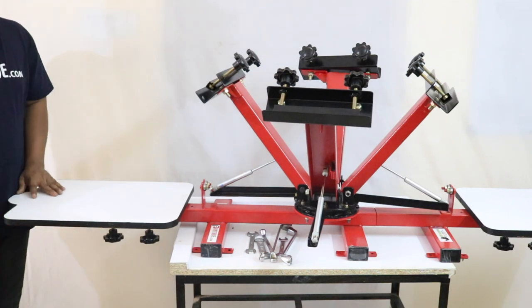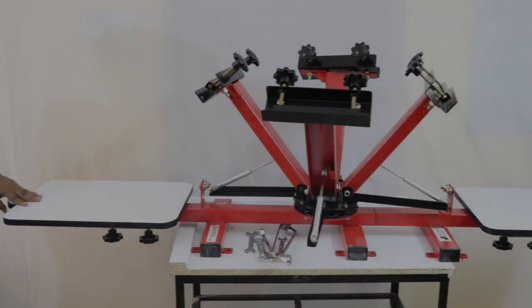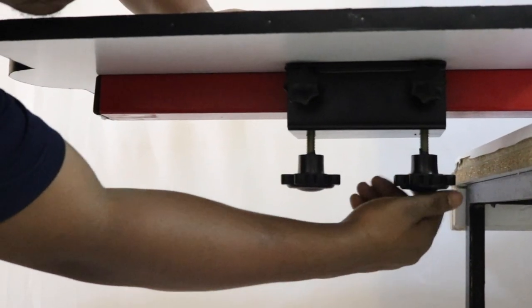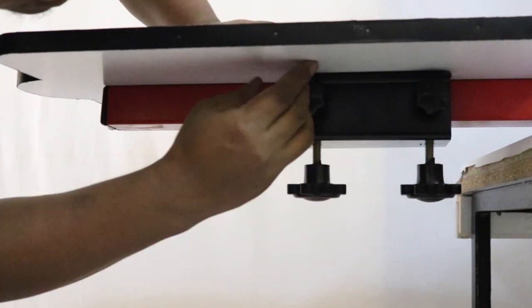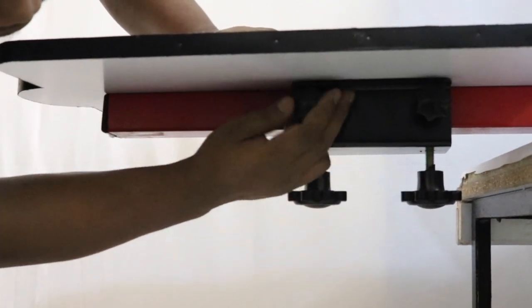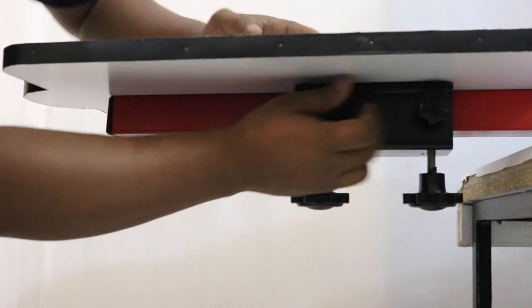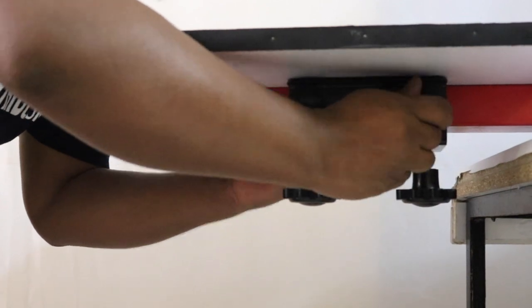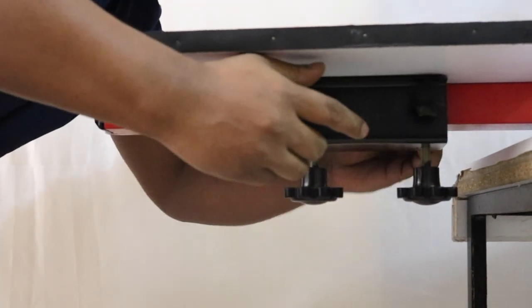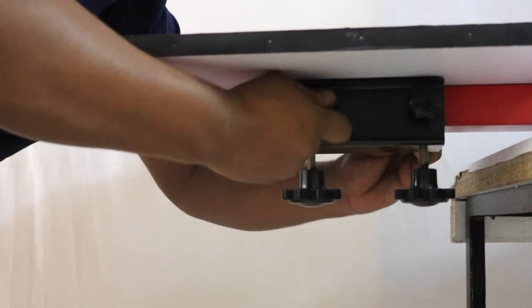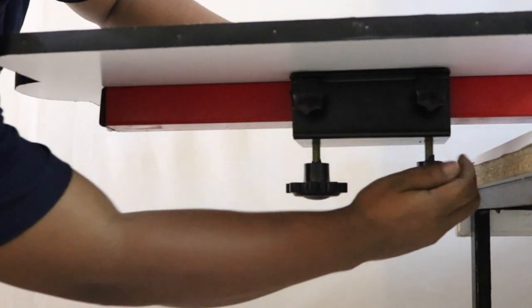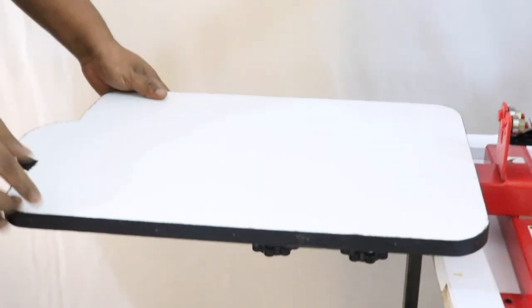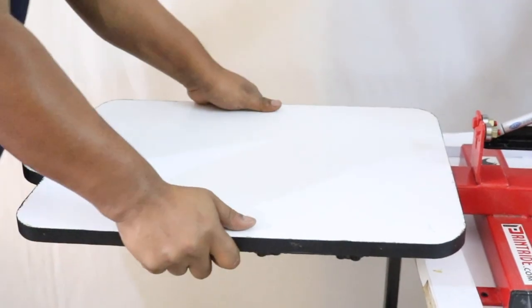Now just put it inside then again tighten it up on the down side and also sideways. Tighten it properly so that the palette will not shift while printing. This is almost done, you can see it's fully adjusted.